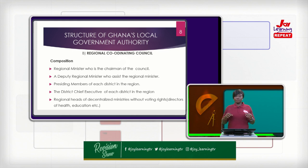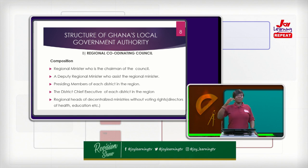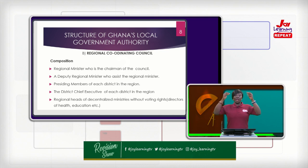Those who vote in the RCC are the regional minister, the deputy regional minister, the district chief executive of each district, and presiding members within the region. For example, Greater Accra is a metropolitan system, and within the metropolis are districts. At every meeting of the Regional Coordinating Council, you would find the Greater Accra Regional Minister, his deputy regional ministers, presiding members of every district in Greater Accra, and the district, municipal, or metropolitan chief executives present as part of the composition.